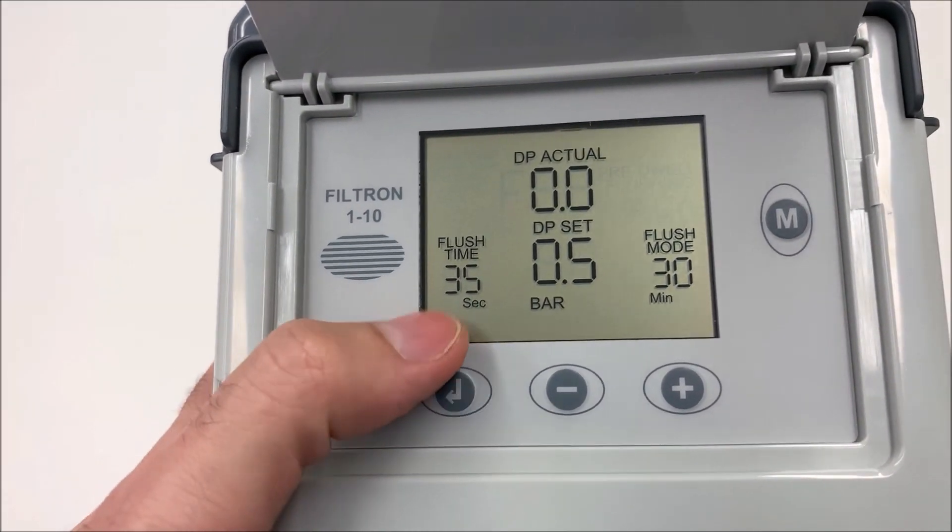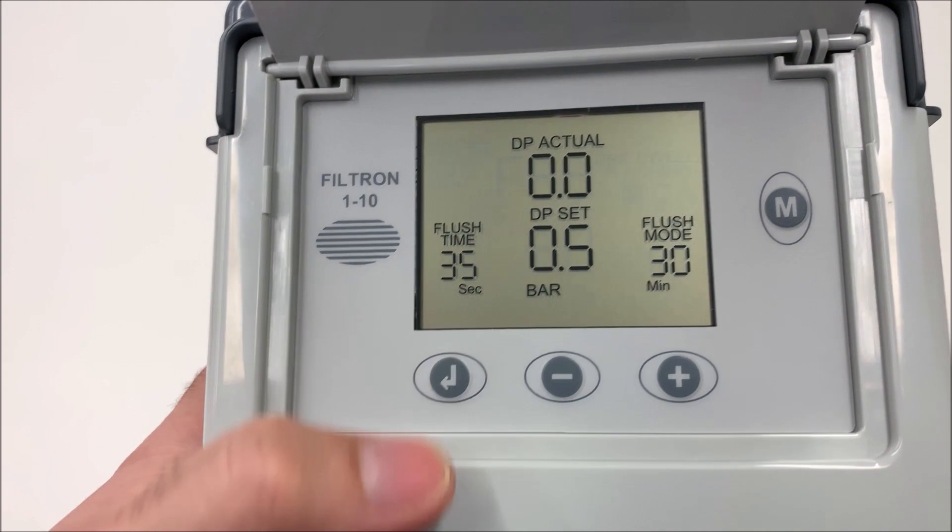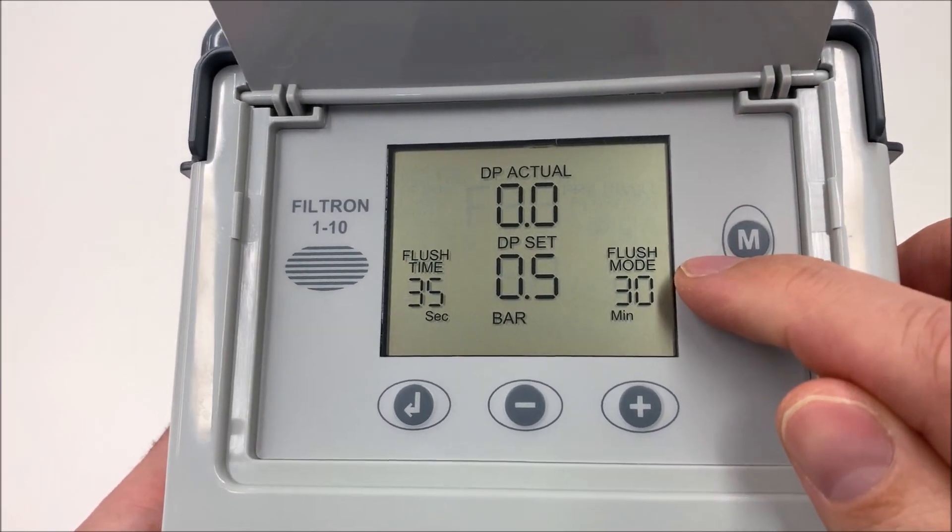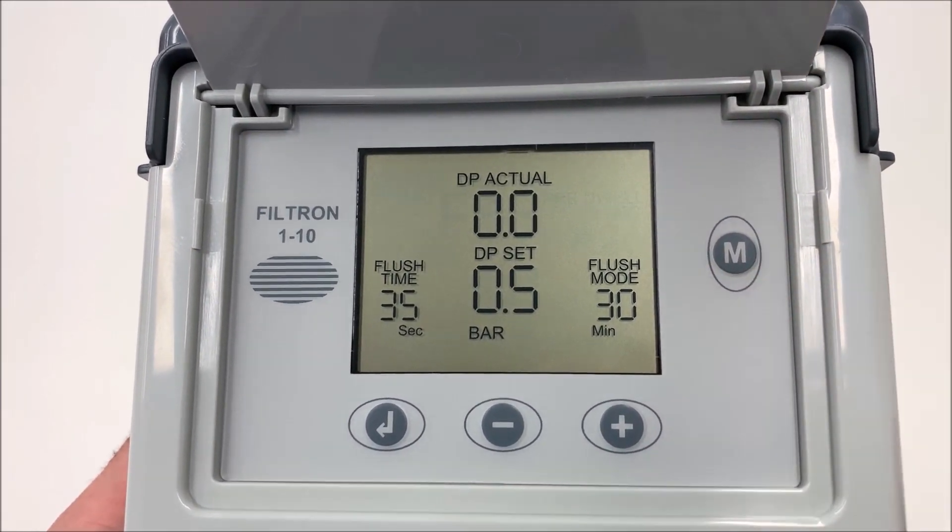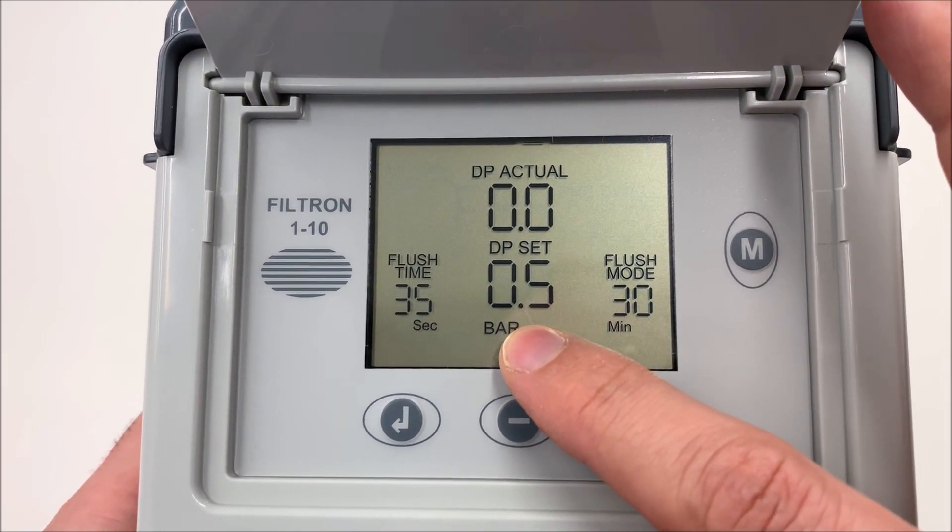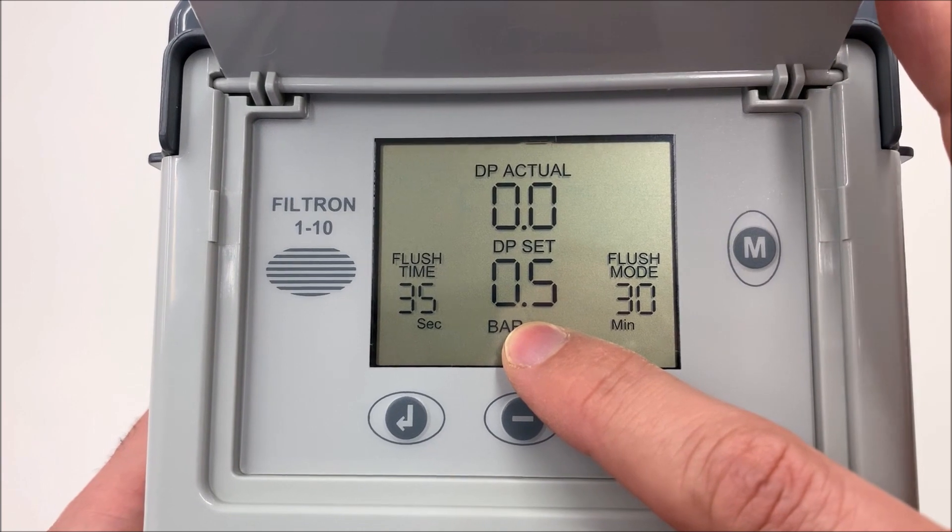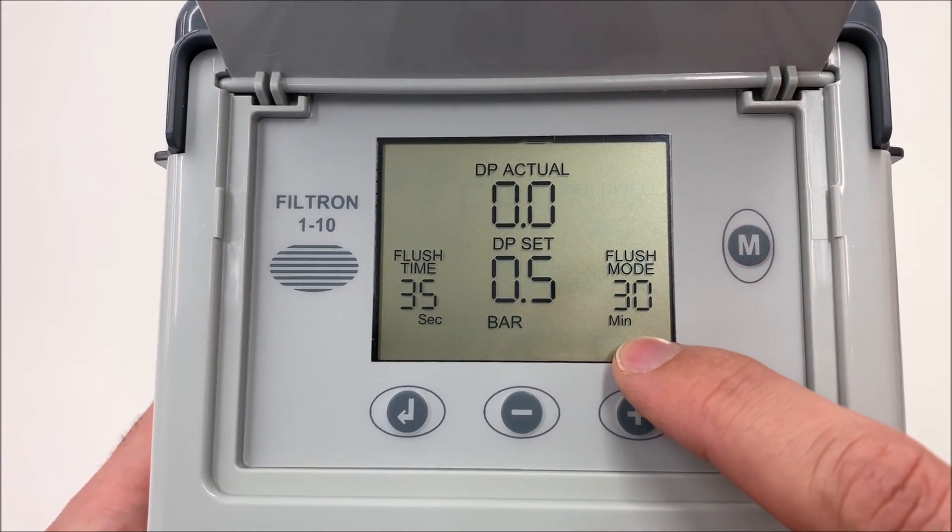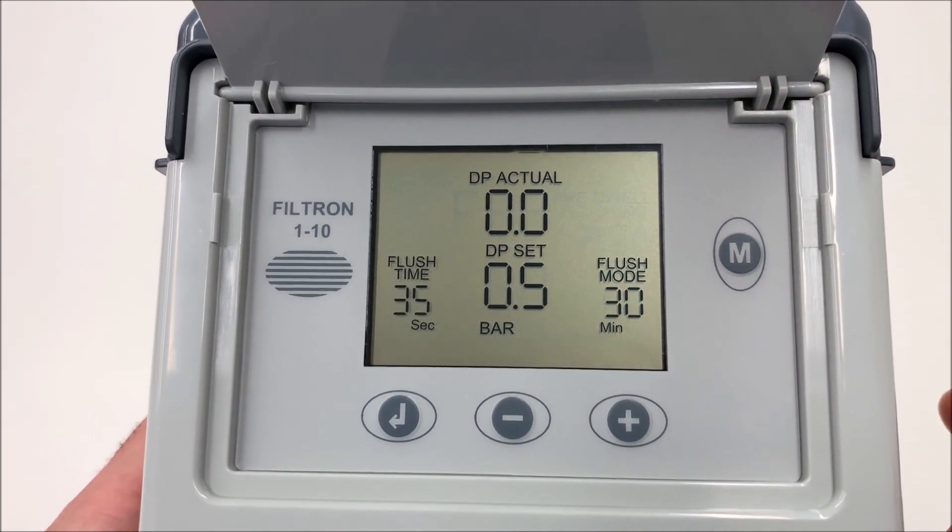Flushing time, in this case, is 35 seconds. And flushing mode is 30 minutes. That means that the thing that happens the first, that we arrive to the preset differential pressure or the preset time, will activate the backwash.